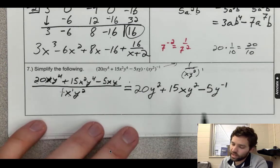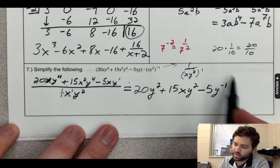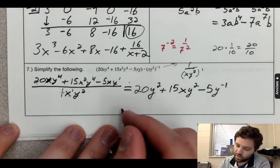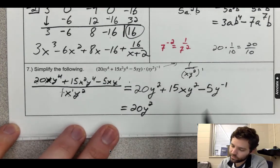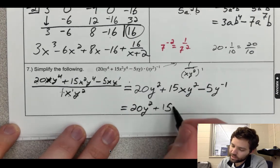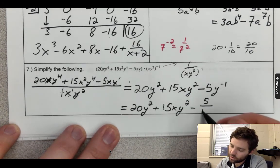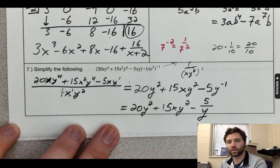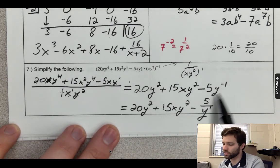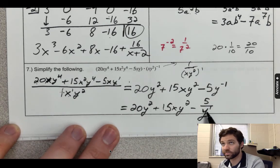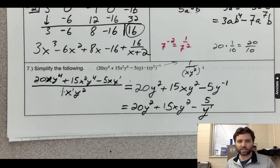And then the book says—and I kind of agree with them—that your simplified form should have no negative exponents. So you should end with your answer as 20y² + 15xy² - 5 over y, because remember y⁻¹ is the same as y to the positive 1 in the denominator. And that finally wraps up section 4.3.